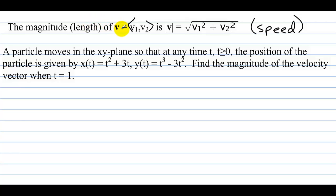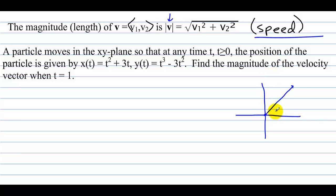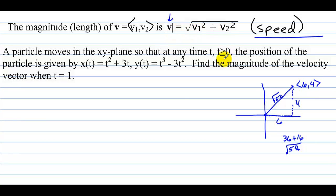The magnitude or length of a vector is denoted by what looks like absolute value symbols, but when dealing with vectors they mean magnitude. It equals the square root of v1 squared plus v2 squared. Imagine a vector in standard position to the point 6, 4 — the length is the hypotenuse of the right triangle formed: the square root of 36 + 16 = square root of 52. The magnitude is simply the length of the vector, or the hypotenuse of that right triangle.